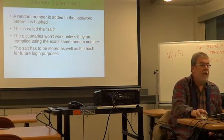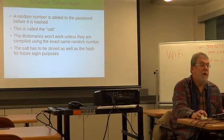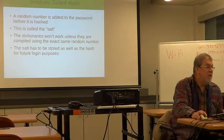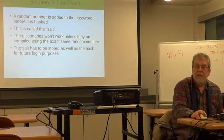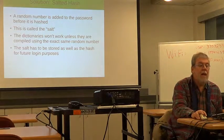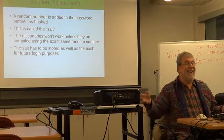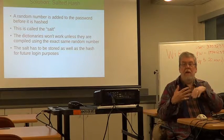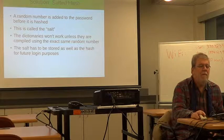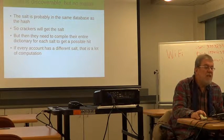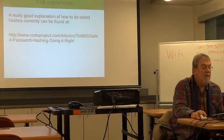The next thing a site can do is something called a salted hash. That's where they add a random number to the password before applying the hashing algorithm, and they use a different random number for each person — that's called the salt. That random number has to be stored in the same database as the hashed password, but it creates a huge problem for the crooks, because generating that dictionary takes time, and if they have to do it for each and every password individually, it becomes a computational mess. The state of the art right now is the salted hash.